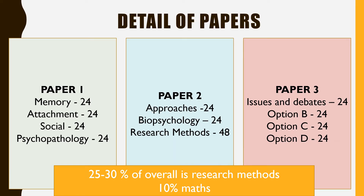Let's begin by taking a look at the structure of the examination itself. As you can see on the slide, we've got three different papers: paper one, paper two and paper three. Paper one has four topics — well, technically five, I'll talk about that in a moment. We've got memory, attachment, social and psychopathology. Each of the papers is out of 96 marks, so there's equal weighting for those four sections, with each being 24 marks.